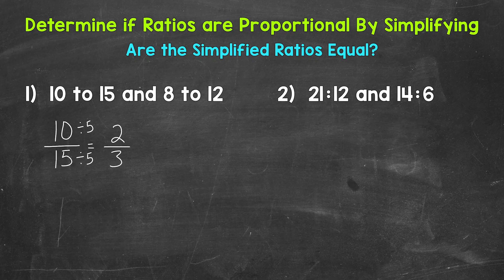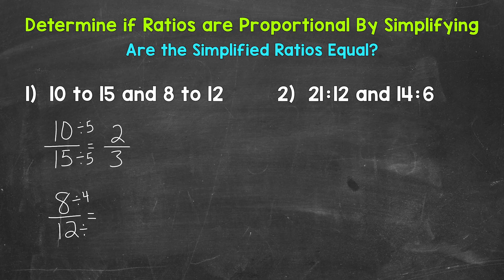Now we need to simplify 8 to 12. The greatest common factor between 8 and 12 is 4, so let's divide both of these terms by 4. 8 divided by 4 is 2, and 12 divided by 4 is 3.